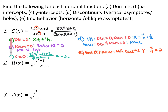For domain, x cannot be plus or minus 1 half. For x-intercepts, I set the numerator equal to 0, but it doesn't factor and has no real solution, so there are no x-intercepts. For y-intercepts, I set x equals 0, and everything with an x goes away, giving 2 divided by negative 1, which equals negative 2. For discontinuity, neither denominator factor cancels with the numerator, so they're both vertical asymptotes at x equals negative 1 half and x equals positive 1 half. There are no holes since no factor makes both numerator and denominator zero.